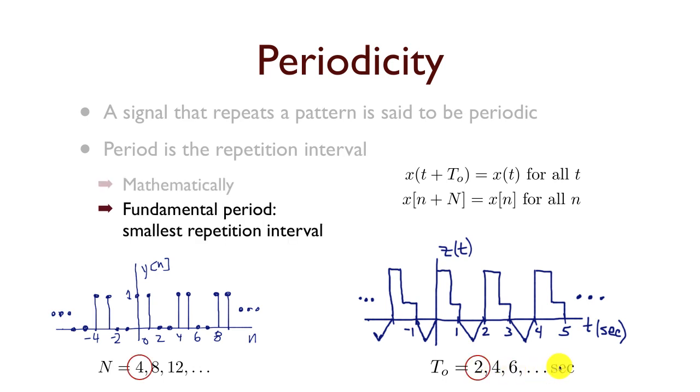Now we define the fundamental period to be the smallest repetition interval for the signal. For my discrete time signal, the smallest interval over which it repeats is capital N equal to 4, whereas the continuous time signal, the smallest interval for which it repeats is T0 equals 2 seconds.